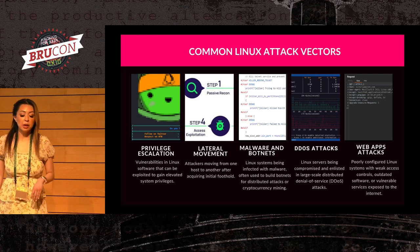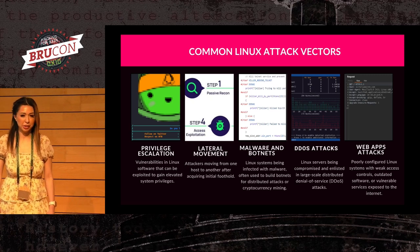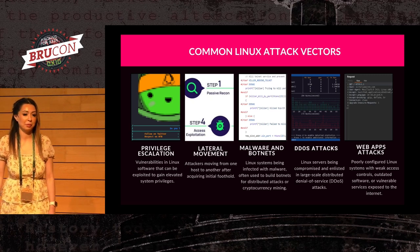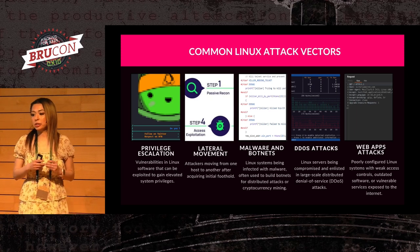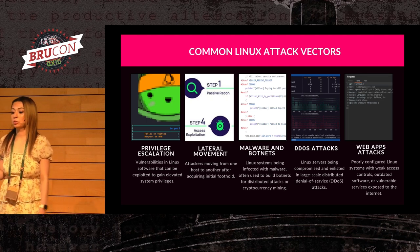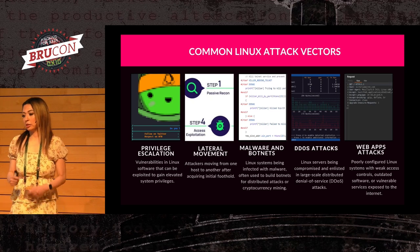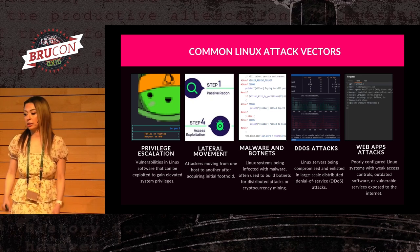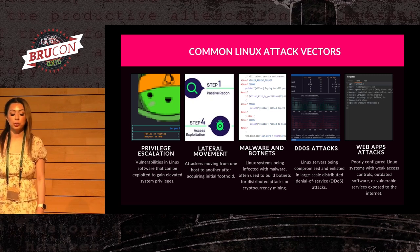Lateral movement happens when an SSH key gets compromised, or a service account. And even if it's a service account we're not familiar with, nothing stops that password from being reused later on within the network. Malware and botnets: Linux systems being infected with malware and often used to build botnets for distributed attacks. Distributed denial of service — Linux servers being compromised in a large-scale DDoS. Typical example: flooding a host with ICMP requests, pinging it like crazy. Or resource exhaustion.